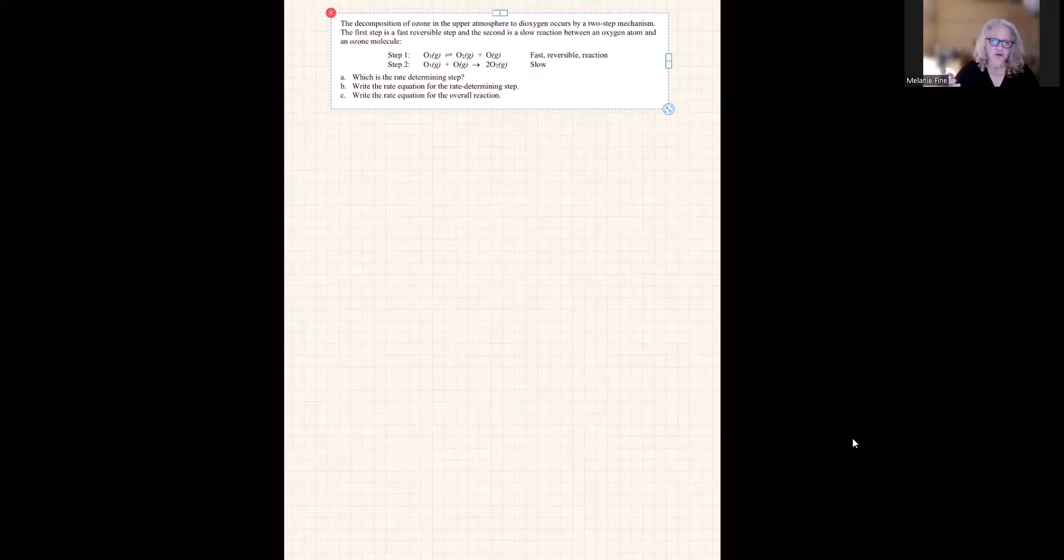The decomposition of ozone in the upper atmosphere occurs by a two-step mechanism. The first step is a fast reversible step, and the second is a slow reaction between an oxygen atom and an ozone molecule. So the first question is, what is the rate determining step? That's easy, that's the slow step.